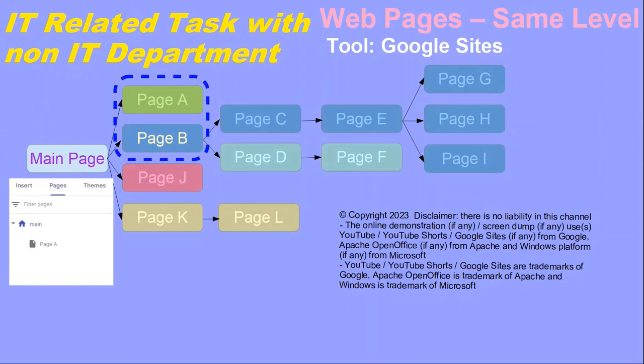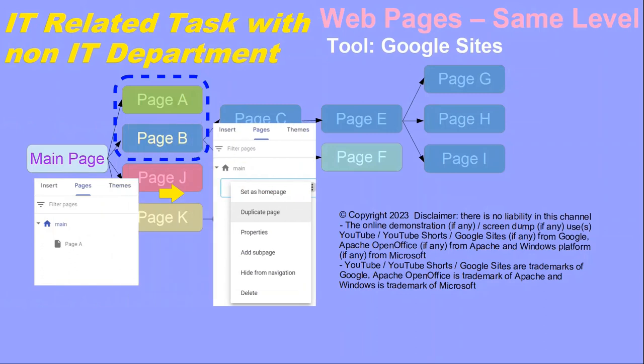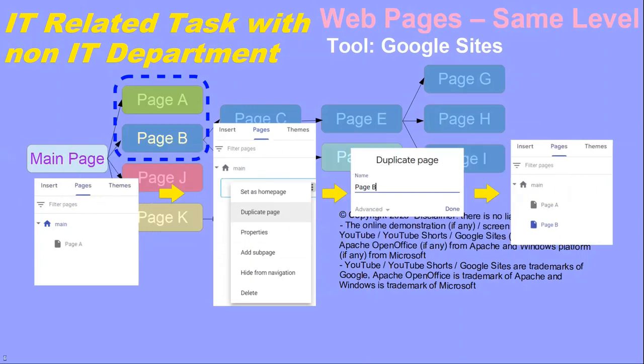At web page A, you can click the three dots and choose 'Duplicate Page.' Enter the web page name. Web page B will then be at the same level as web page A.